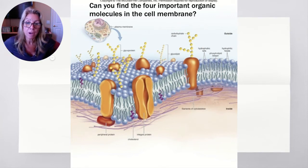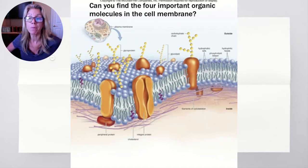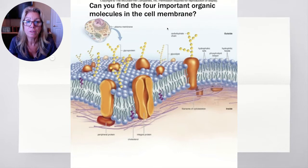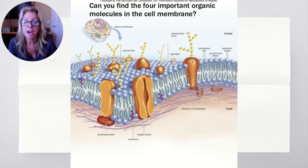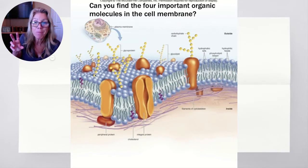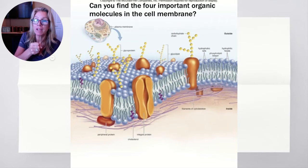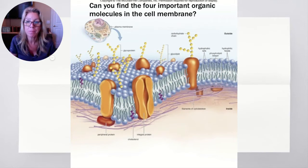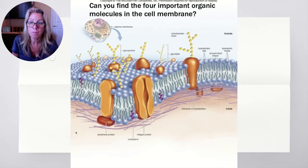We've already talked about bacterial cell walls and the carbohydrates on the outside. There are two kinds: glycoproteins, which are attached to proteins, and glycolipids, which are attached to lipids. The 'glyco' prefix is your clue that it's a carbohydrate — 'lipid' and 'protein' just tell you what the carbohydrate is anchored to.